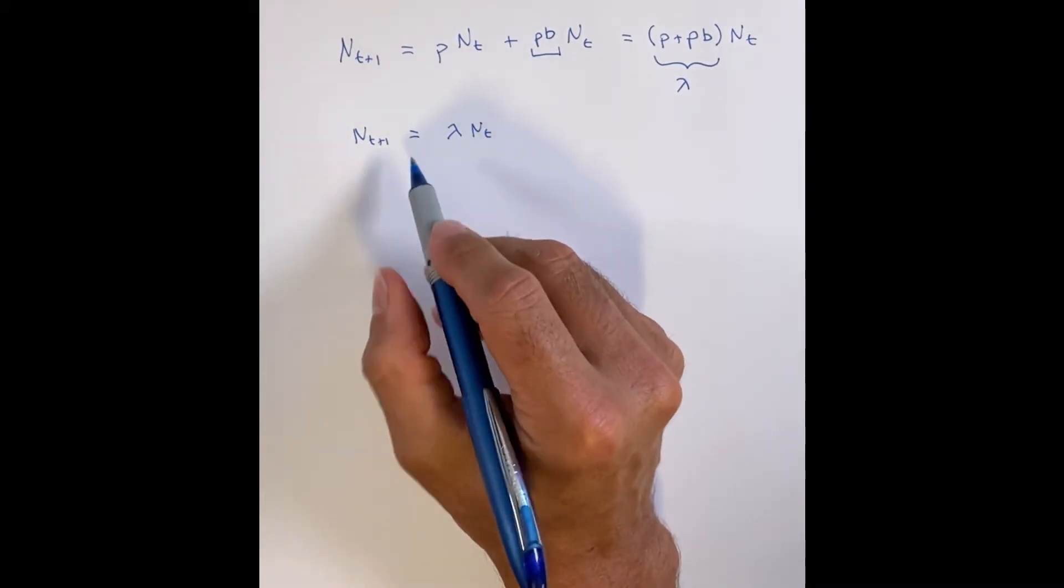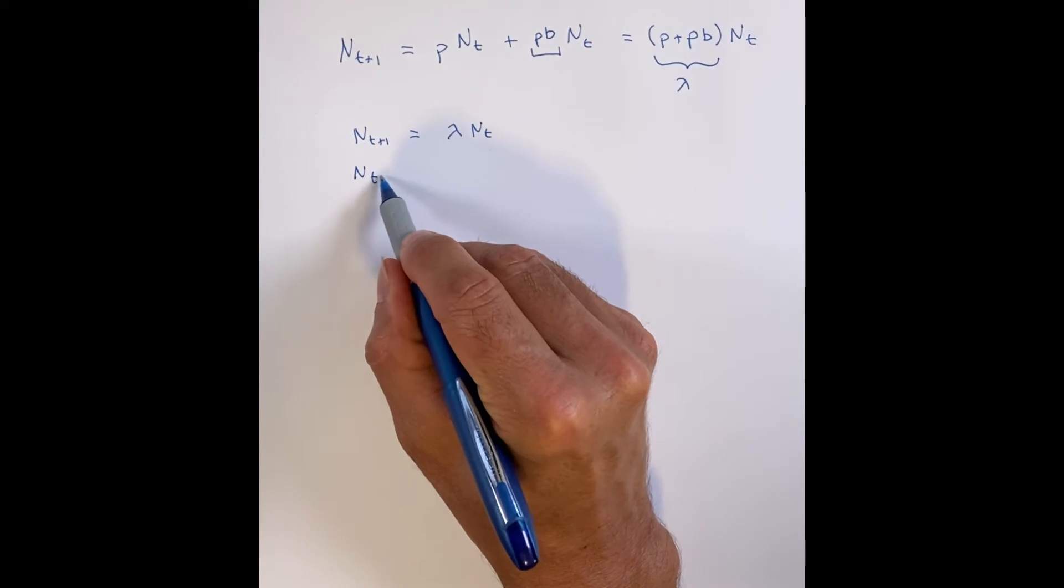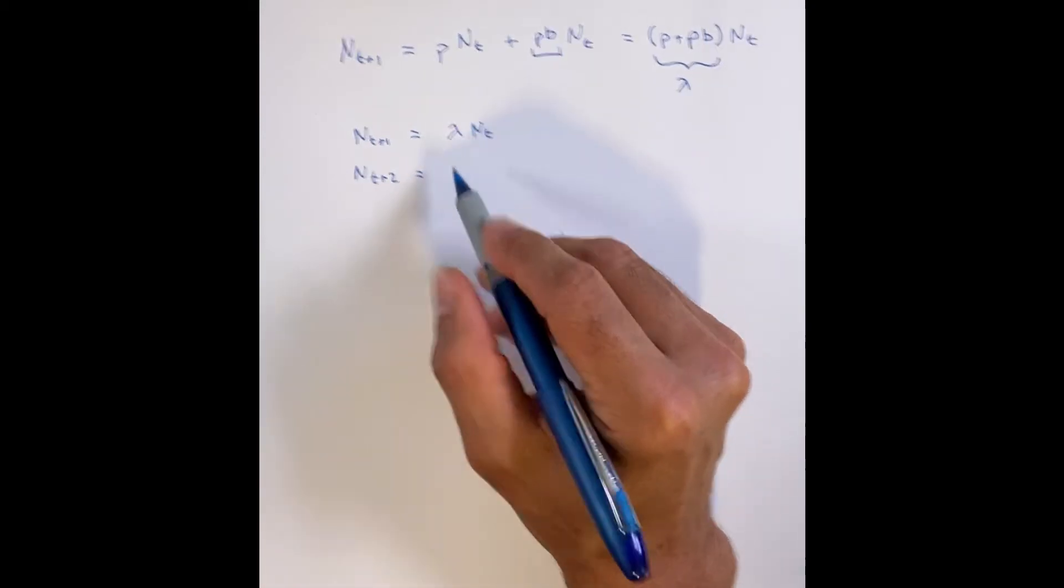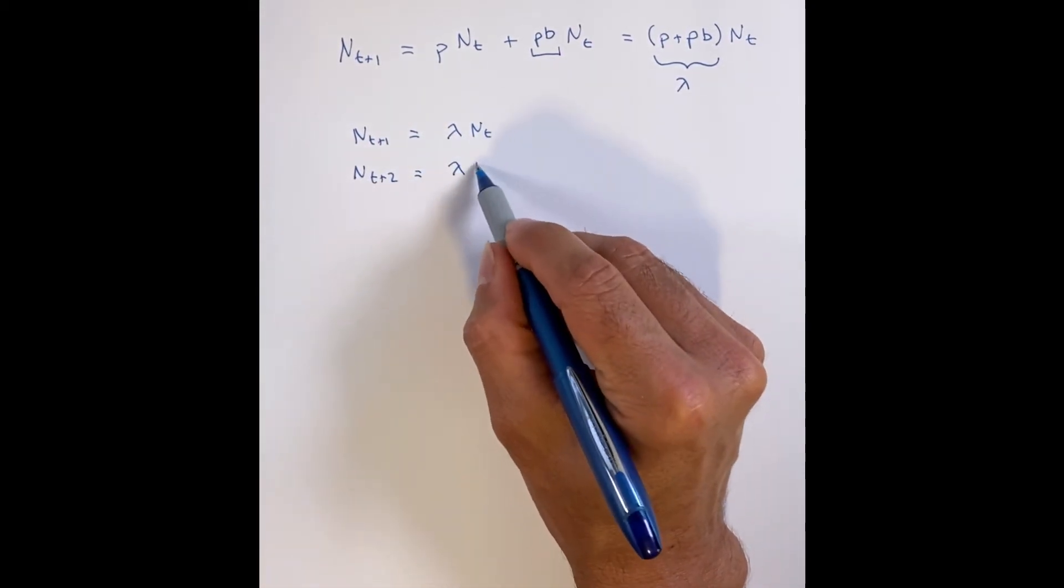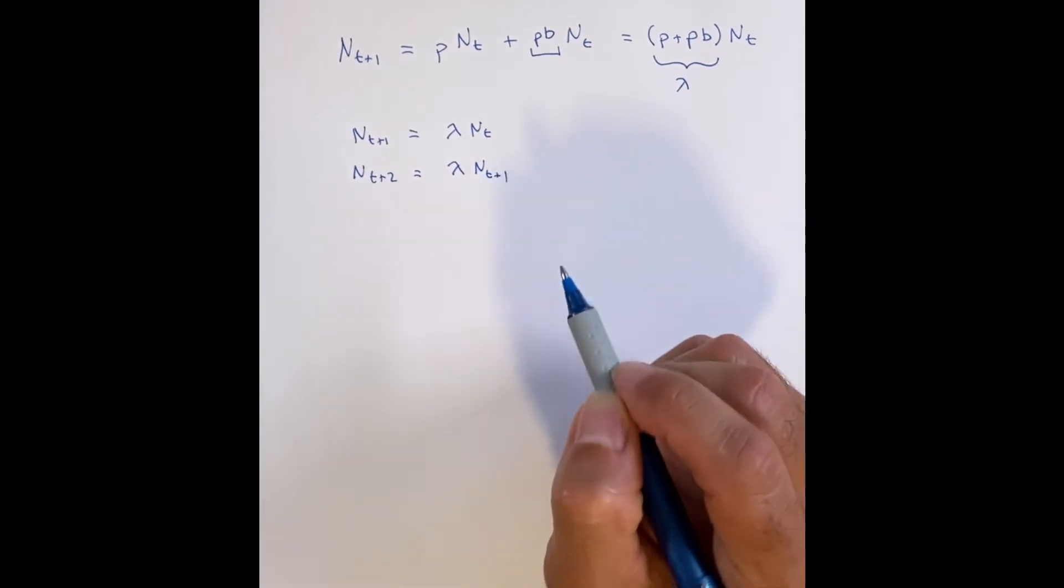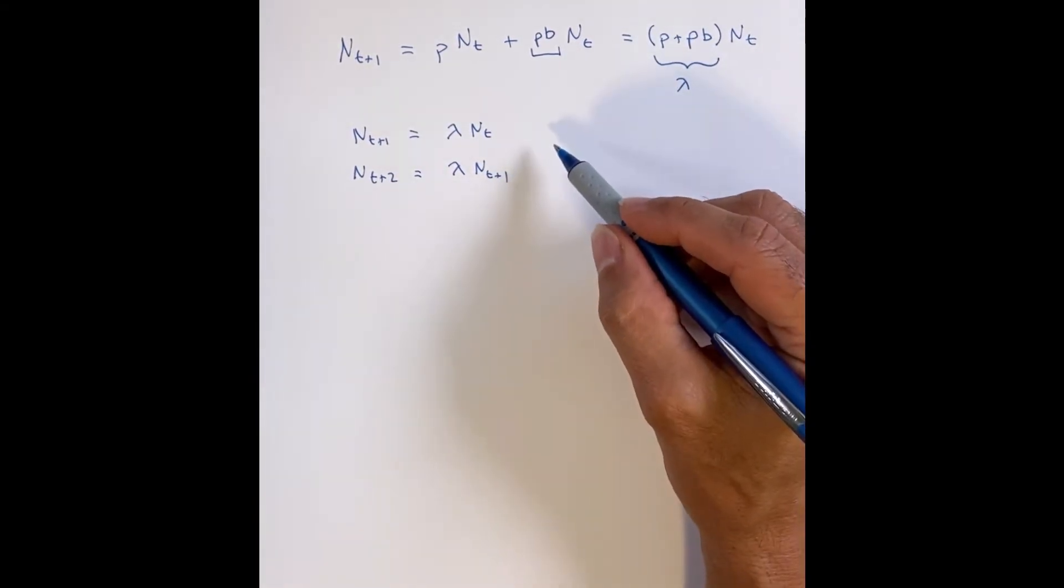So now what if you wanted to figure out how many individuals are going to be at time t plus two, the next generation? Well, again, you take lambda, you multiply it by how many you have, N times t plus one, and there you go.